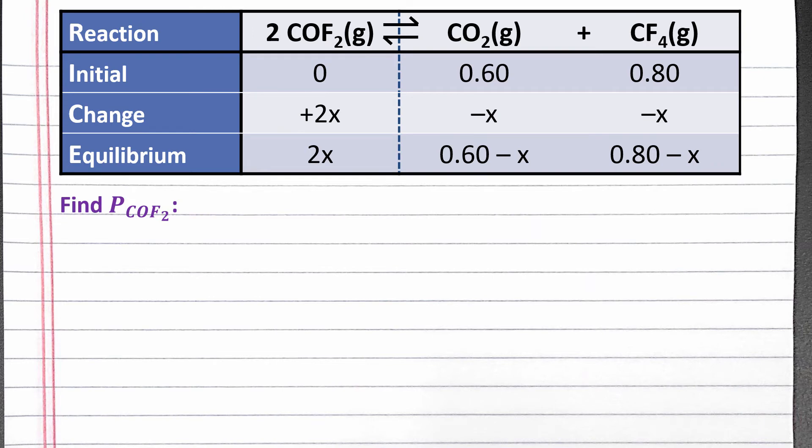Next, we can plug the value of x back into our equilibrium row to solve for the pressure of carbonyl fluoride gas. We should get 4.0 times 10 to the negative 4 atmospheres, which should be our answer to this problem.